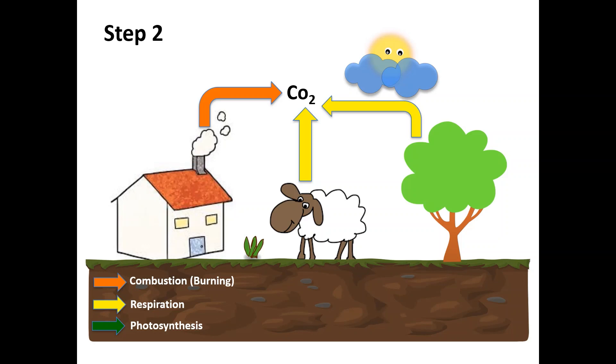Then, plants that are also known as producers will absorb carbon dioxide to make sugar in the photosynthesis process.